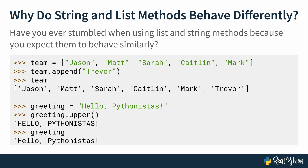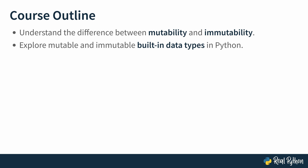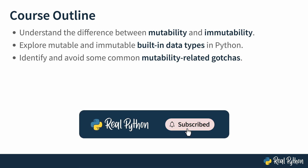So before we get started, here's what you can expect from this course. You'll understand the difference between mutability and immutability. You'll explore mutable and immutable built-in data types. Python has several built-in data types — some of them are mutable, some of them are immutable — and we'll see which ones are which and why they behave the way they do. You'll also identify and, importantly, avoid some common gotchas you encounter when dealing with mutability. Let's get started.